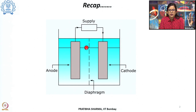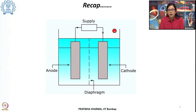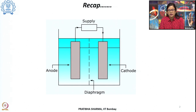There is a separator which performs two functions: one is to physically separate the two electrodes, and at the same time to prevent intermixing of the product gases released at the cathode and anode. This allows hydrogen from the cathode side and oxygen from the anode side to be collected separately.